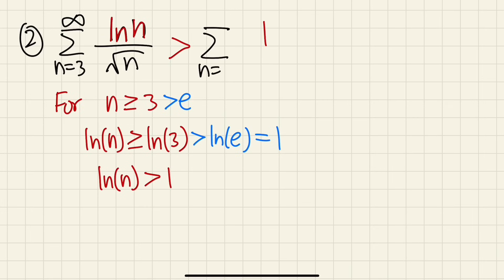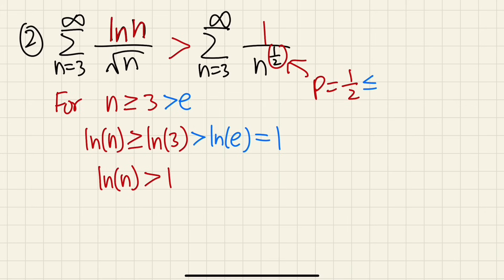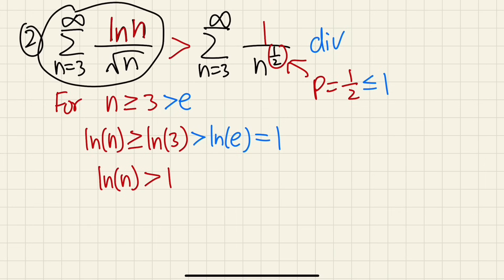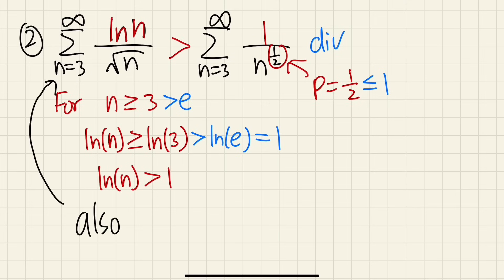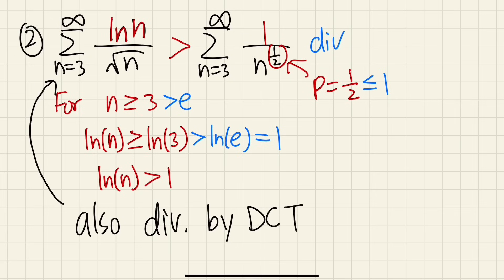Writing down the rest: √n is the same as n to the 1/2 power. For the p-series, p is equal to 1/2, and since p is less than or equal to 1, this series diverges. What we have shown is that our series is bigger than a divergent series — since you have something bigger than something that diverges to infinity, this series also diverges, by the direct comparison test (DCT).